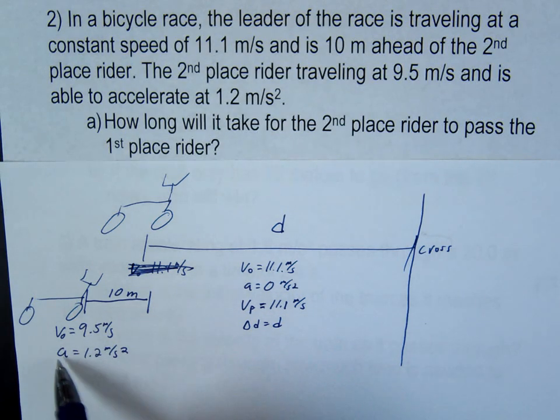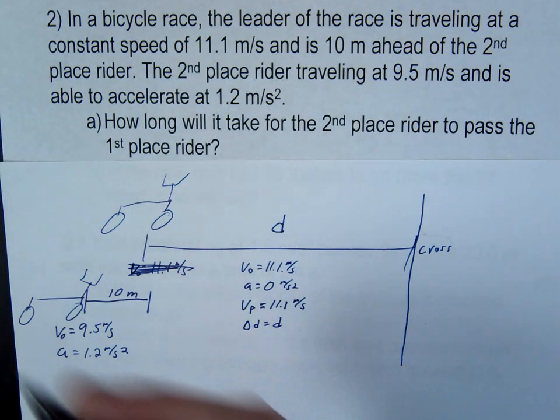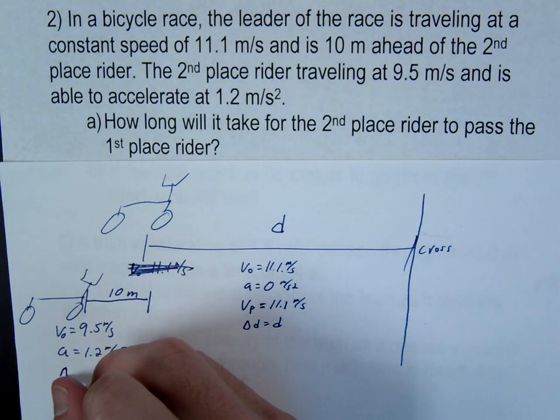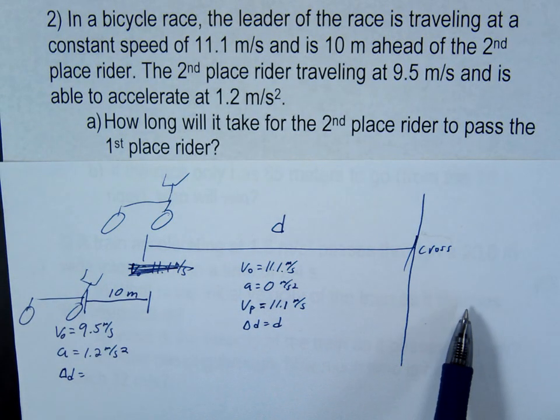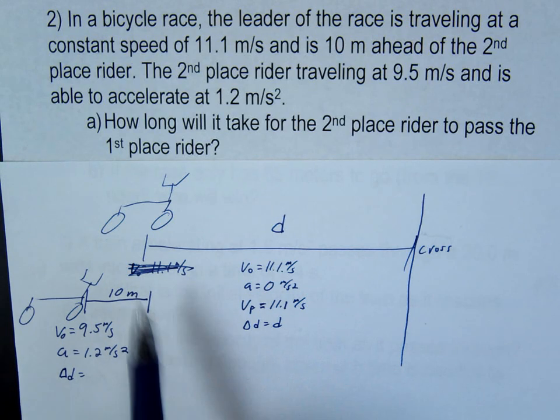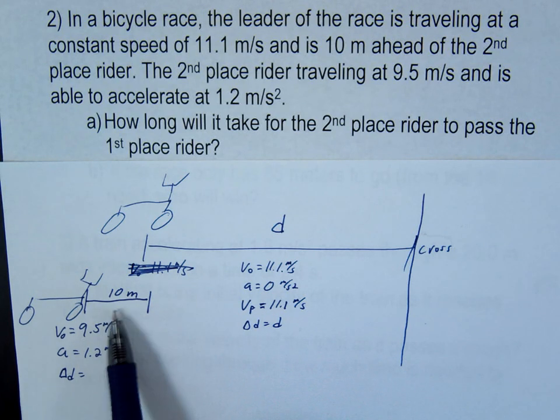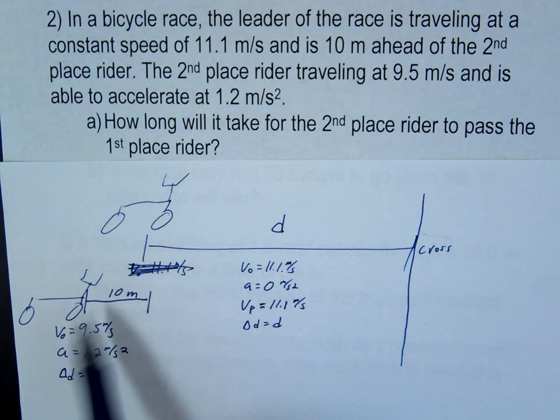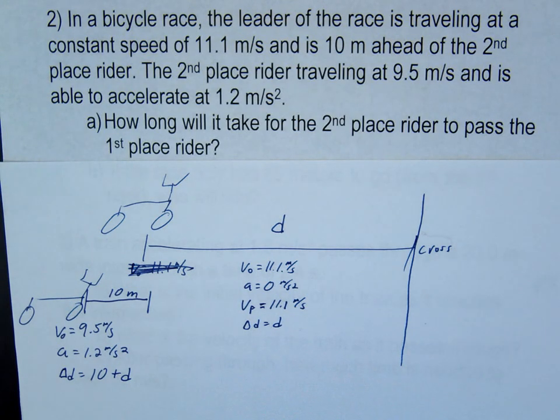This guy starts at 9.5. He does have an acceleration. We don't know his final velocity. We don't know his distance. We know a little bit about his distance. How far does this guy have to travel to cross? It's not 10 meters, because at 10 meters, this guy is still going. So how far does he have to go? 10 plus d. So 10 plus an additional d. So we'll write that as 10 plus d for this guy.